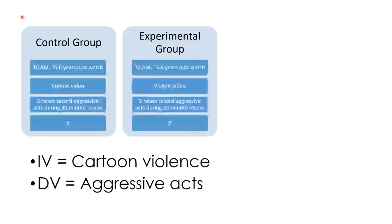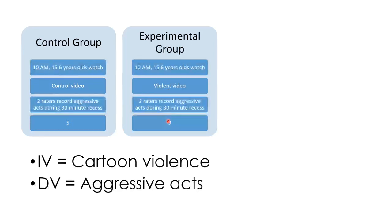So let's go back to the basic experiment. Here's the experiment we talked about in that first set of videos. We have six-year-olds watching a control video versus some other six-year-olds watching a violent video. Then they have recess for 30 minutes, and raters count the number of aggressive acts. The control group had an average of five aggressive acts, and the experimental group had an average of nine. That at least indicates there was an effect of the type of video — the violent video caused more aggression. However, we'd have to do a statistical analysis to know for sure.